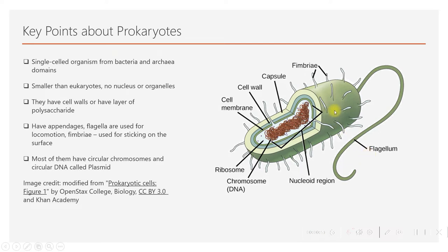They also have fimbria, which are used for sticking to surfaces. Another thing that is very different from eukaryotic cells is that their genetic material is very simple, circular, and also called a plasmid. This is a very basic overview of prokaryotes.